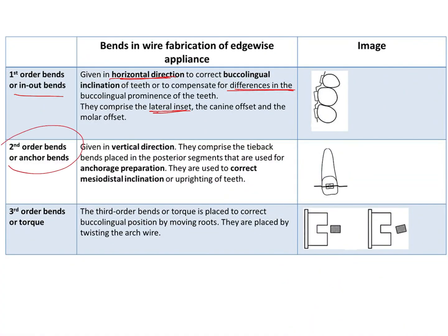Second order bends are very versatile and can bring about many different types of changes. For example, they can be used for anchorage, which is why they are also known as anchor bends. They are also known as V bends, tip-back bends, or artistic positioning bends. They are given in the vertical direction and help to bring about mesodistal inclination or uprighting of teeth.